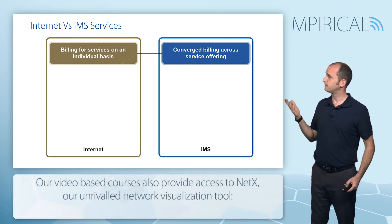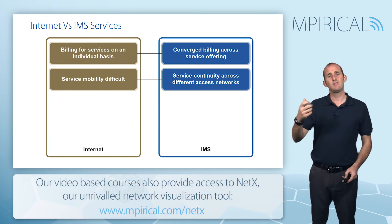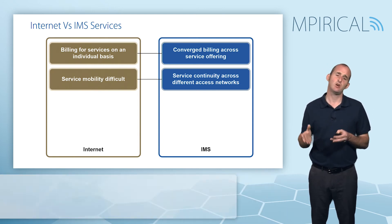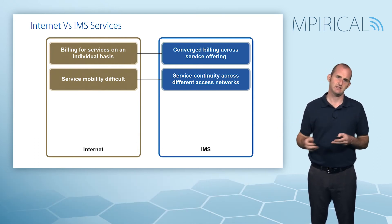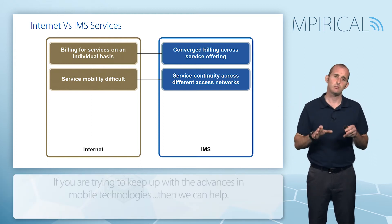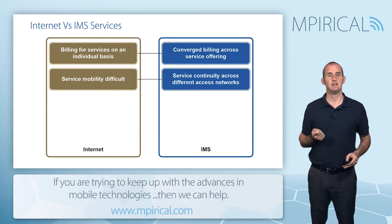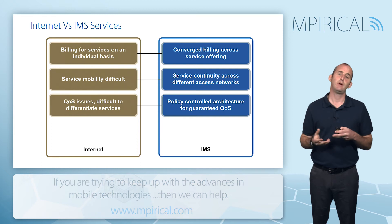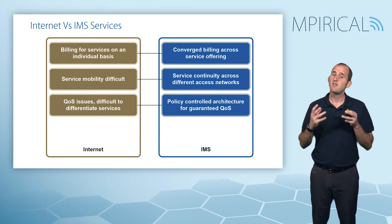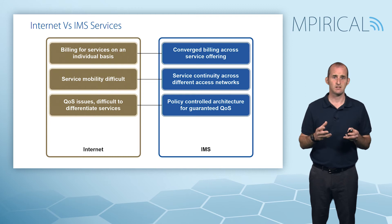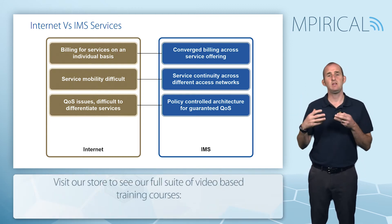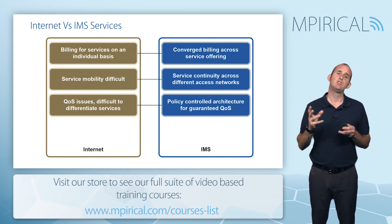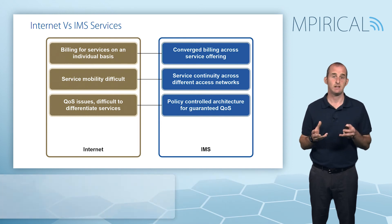Likewise, things like service mobility — if the service is oriented on the internet, it is very difficult to maintain session continuity if we move between different access networks, whereas if the sessions are controlled by the IMS it's easier. QoS is another key differentiator when comparing internet and IMS-based services. There is no QoS on the internet; however, with the IMS that tends to be associated with a controlled managed IP transport network in which QoS can be implemented effectively and appropriately.